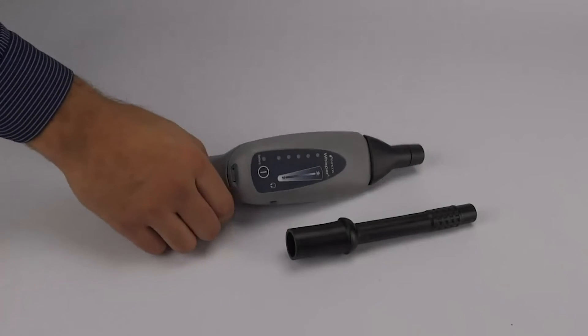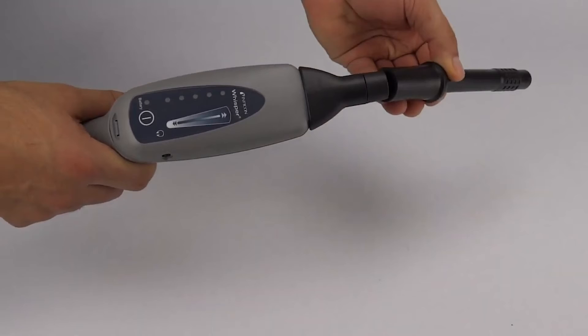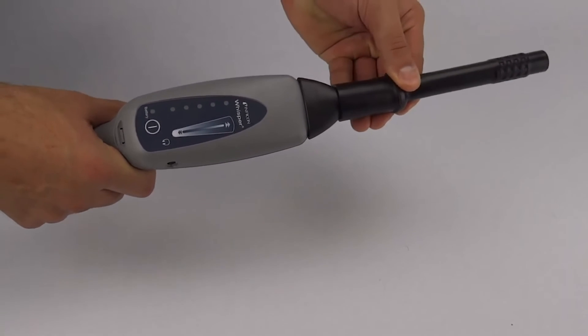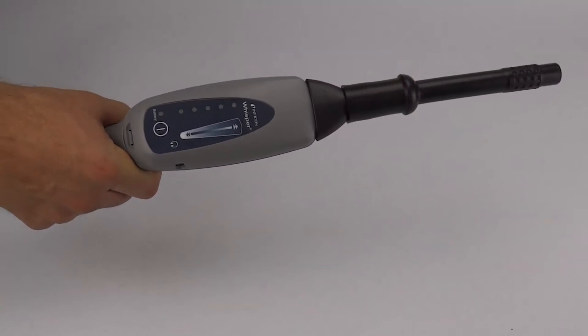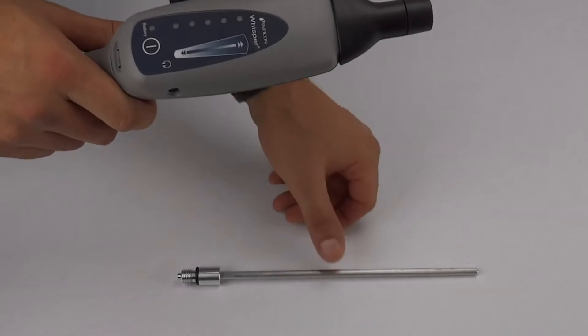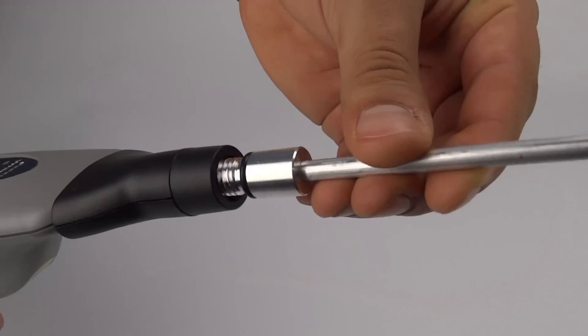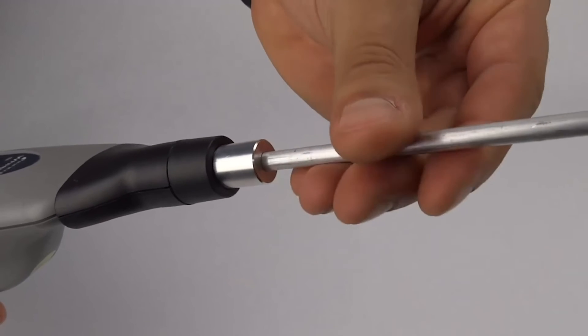The rubber extension probe reduces the spread of Whisper's detection range. This can help locate leaks in environments with background noises. Screw the metal contact probe into the tip of the Whisper to check mechanical parts such as worn bearings.